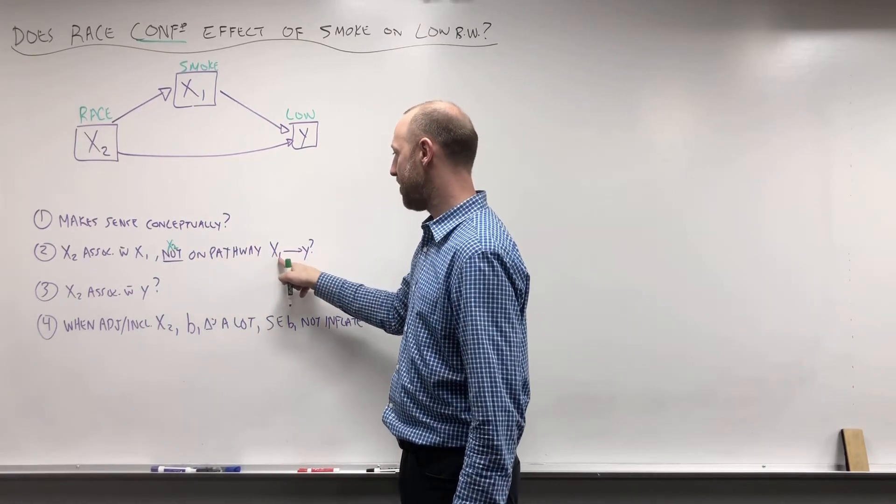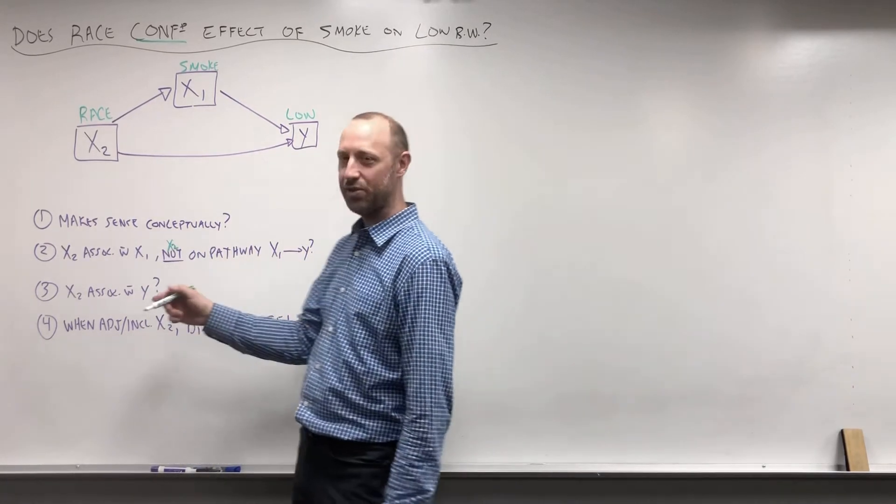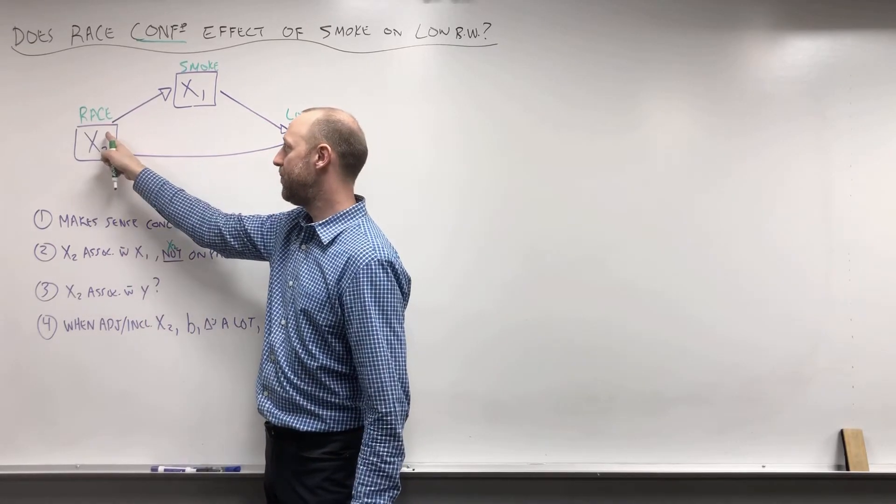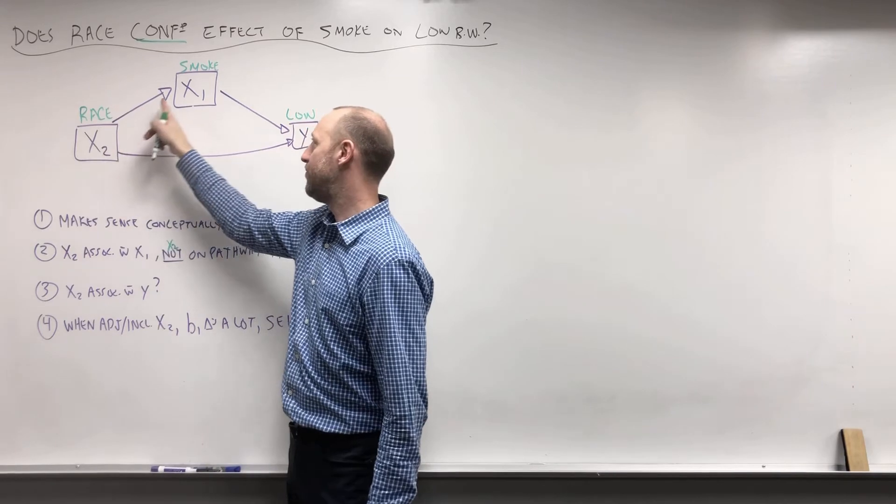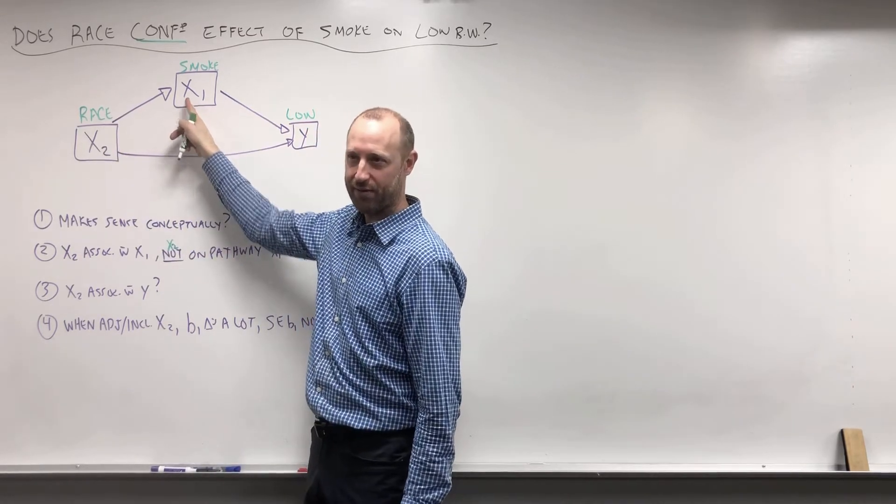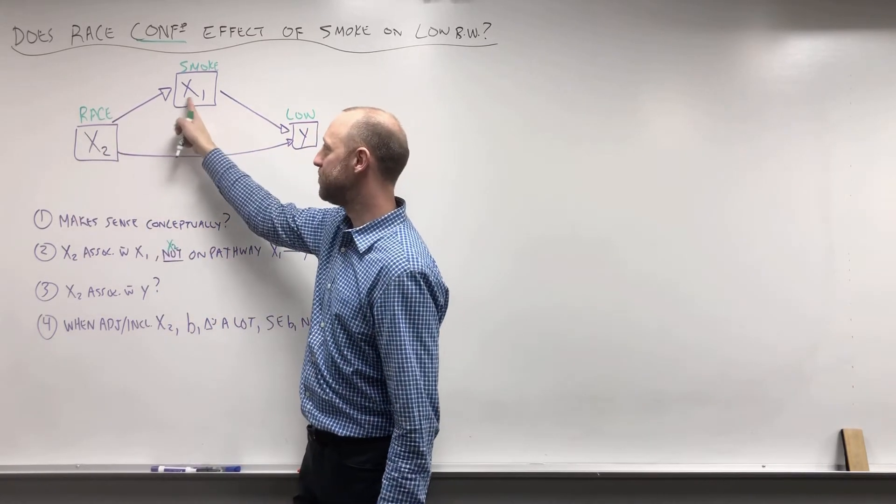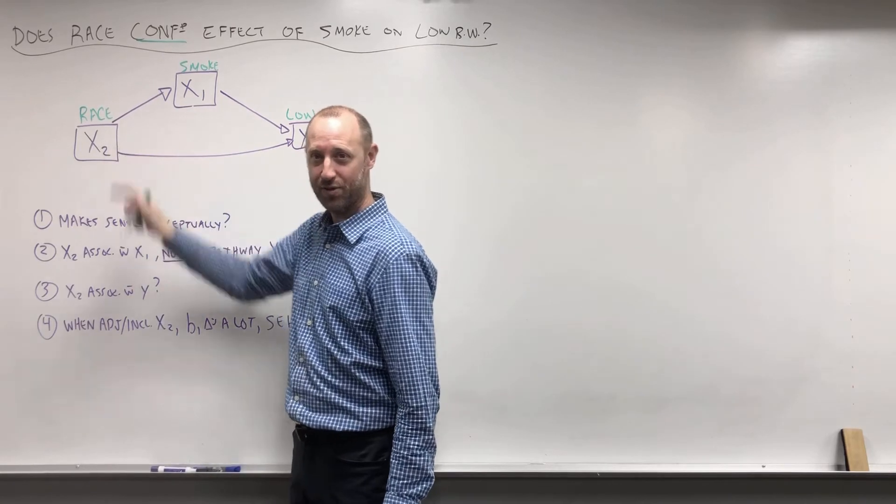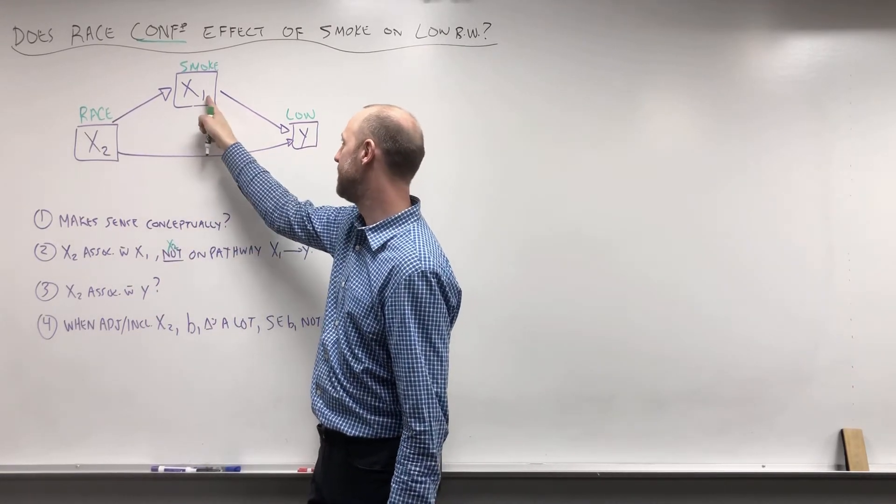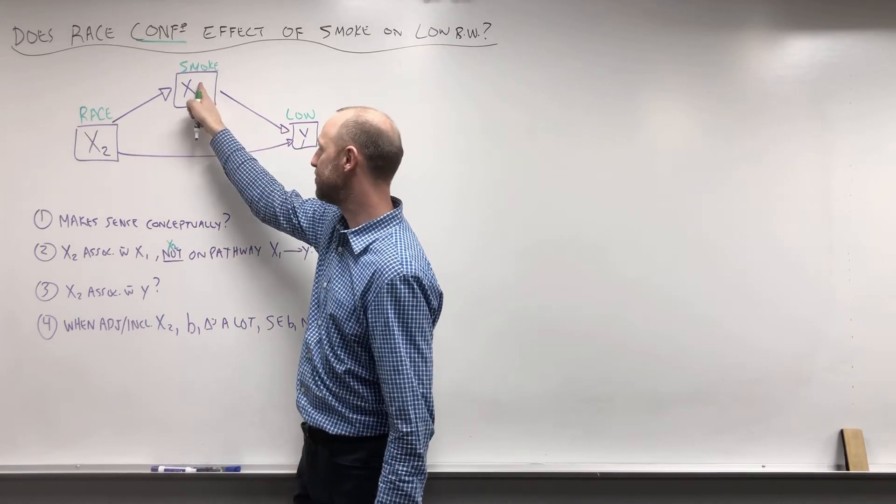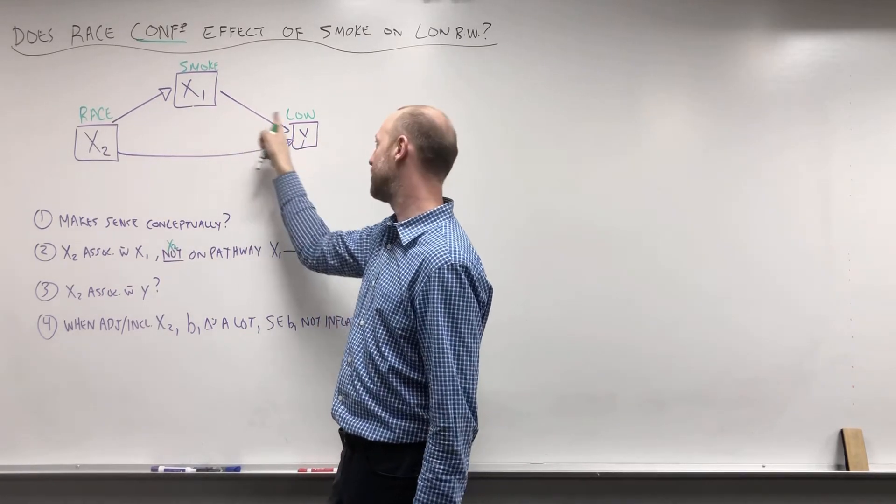Now, is X2 on the pathway? Well, first let's think: if there's an association, it's going to be race, which we think is a proxy measure for culture, affects whether or not you smoke or the likelihood of smoking. It doesn't make sense that smoking affects race. The association is not going that way. So X2 is not sitting on the pathway between smoking and low birth weight. Smoking does not affect race, which in turn affects low birth weight.